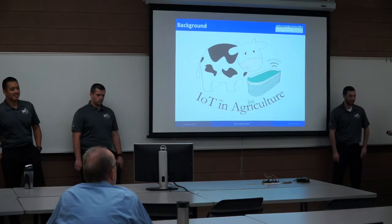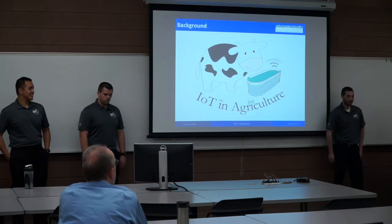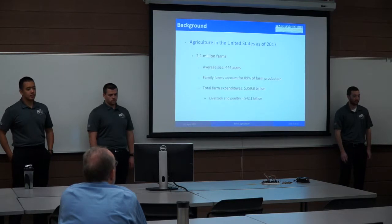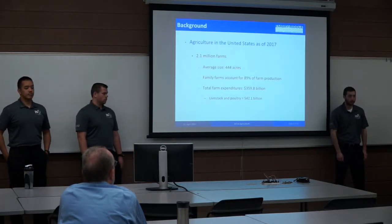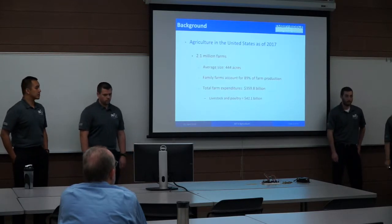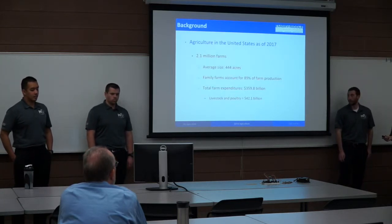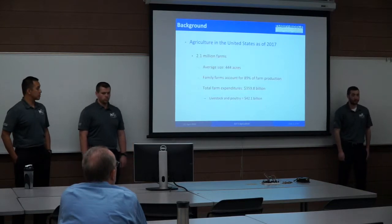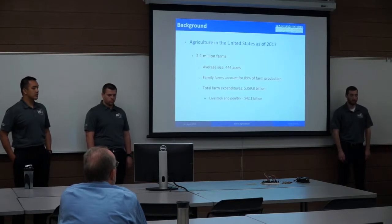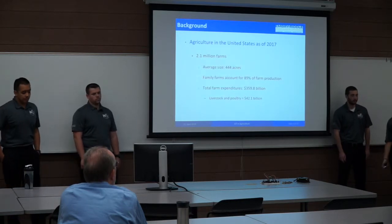So you've probably seen this cow on our picture, on our shirts and on our poster. We are the IoT and Agriculture team because this project was originally proposed for agriculture. As of the 2017 census by the USDA, there are 2.1 million farms in the United States with an average farm size of 444 acres. Family farms account for 89% of farm production in the United States. Total farm expenditures as of 2017 was $359.8 billion, with about 11% being livestock and poultry expenditures.